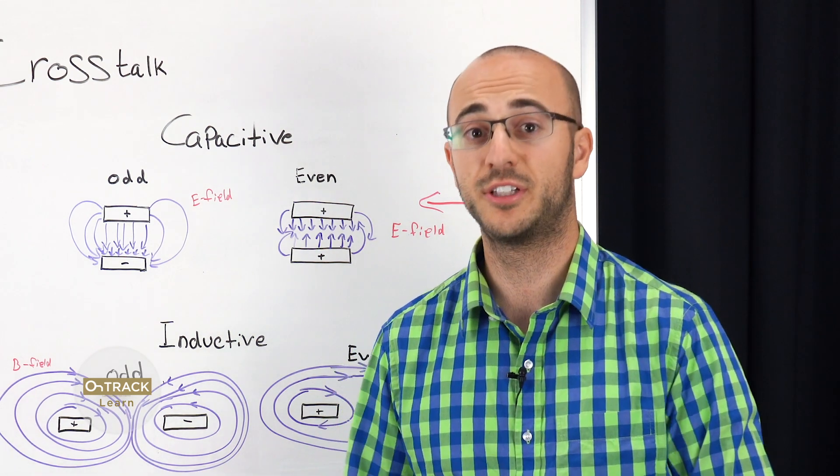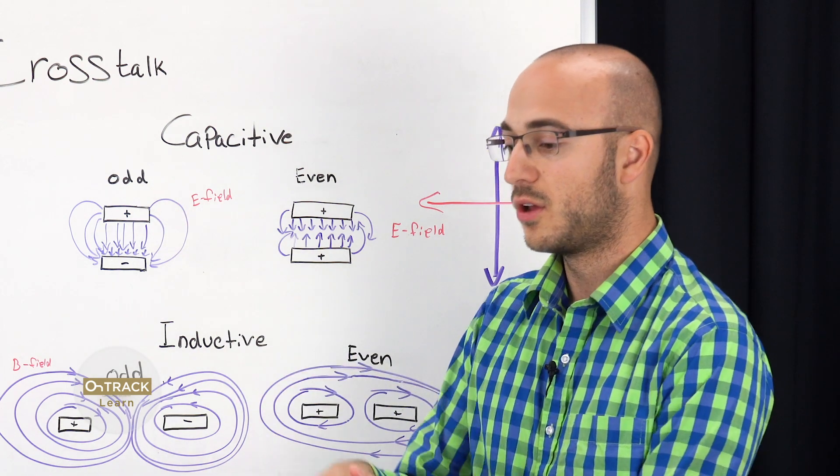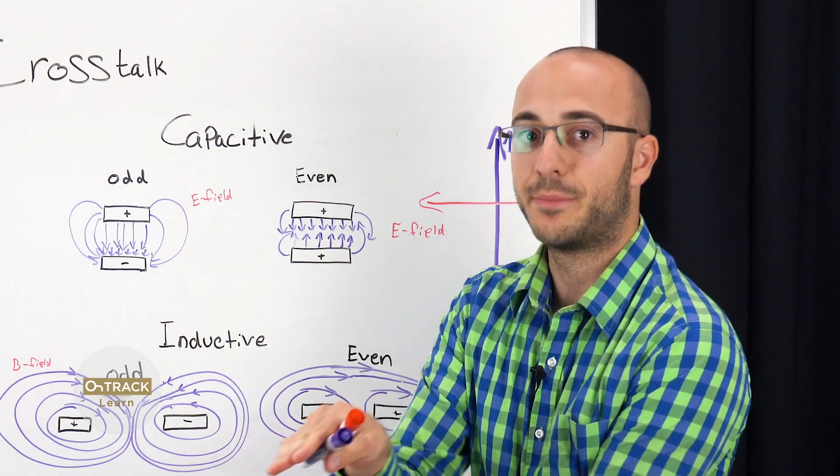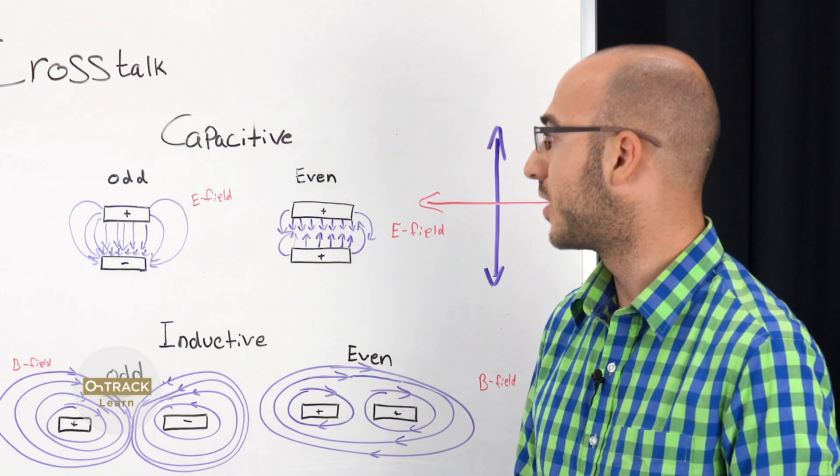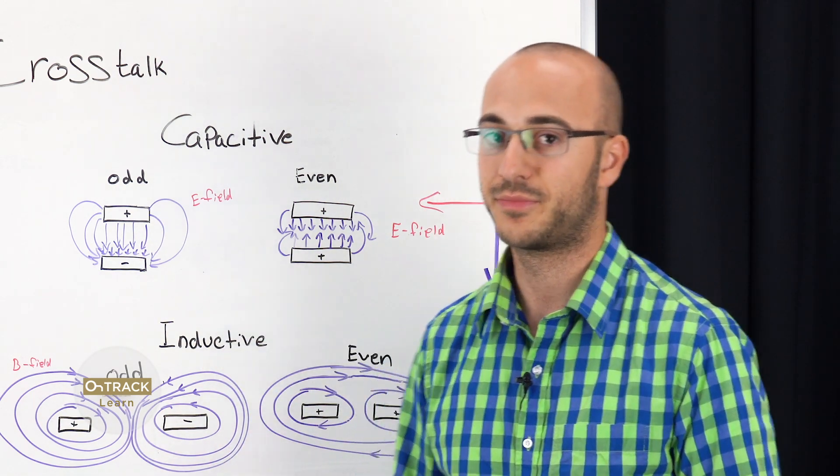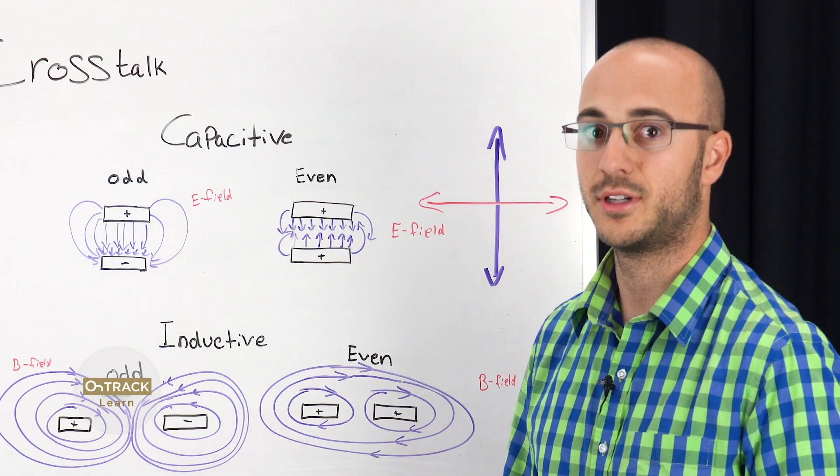Because when you really run into trouble is when you have these two traces overlapping, running parallel to each other. That's bad. Because that's when you're going to get a lot of coupling of the electric field. And you don't want that, because you're going to run into problems.